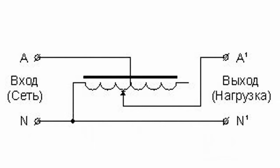Voltage is regulated by the transformation ratio. When the carbon-baked brush moves along the autotransformer winding, the transformation ratio is changed, resulting in a change of the effective output voltage. When the transformation ratio is 1, the entire electric power is galvanically transmitted from the circuit to the load.